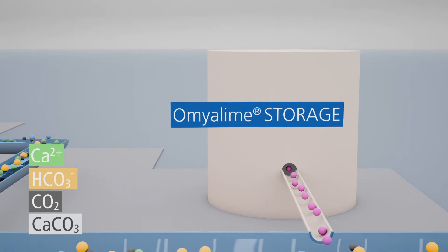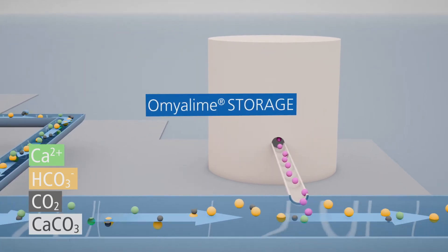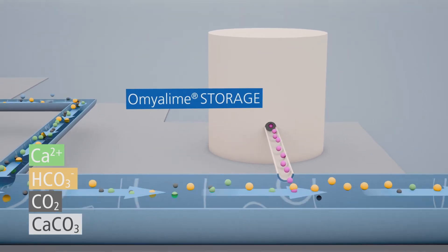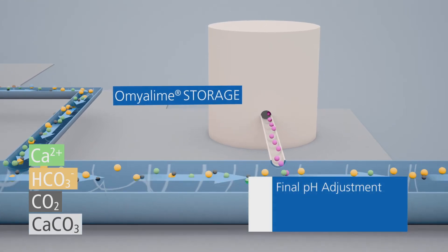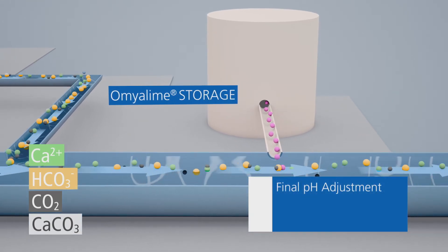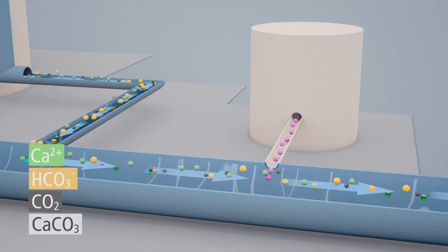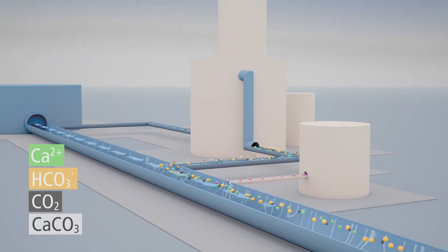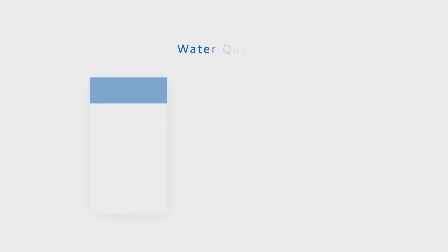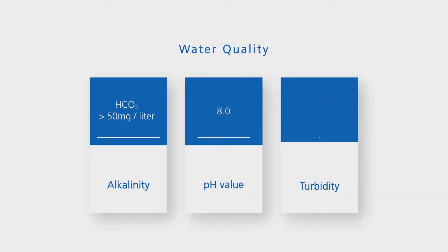Omya lime, a highly reactive milk of lime, can be used for final pH adjustment. It can be dosed directly into the remineralized water stream to neutralize excess CO2, increase the calcium bicarbonate concentration, and finally achieve the required alkalinity, pH, and turbidity targets.